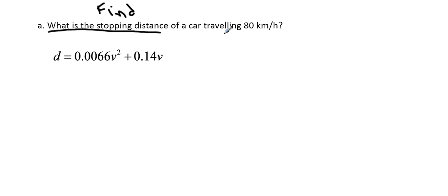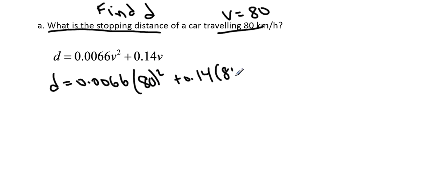What is the stopping distance is telling us find d when v is 80. So the speed is 80, find d. I'm just going to do a straight substitution. There's no real grade 10 part to this question. I just have to be good about using BEDMAS and algebra. Let v equal 80, substitute and solve. So calculator question: 80 squared times 0.0066 plus 0.14 times 80.